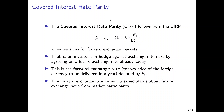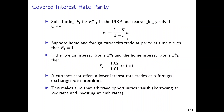To get the covered interest rate parity, we start from the uncovered interest rate parity and substitute the forward exchange rate F_t for the expected future nominal exchange rate e_expected. We then rearrange terms so that we can express the forward exchange rate as the nominal exchange rate today multiplied by the ratio of the foreign interest rate to the domestic interest rate.